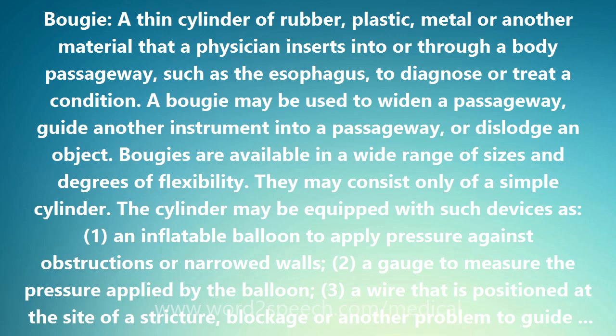Bougies equipped with balloons may be used to eliminate both strictures and blockages in the esophagus. In a typical procedure, a lubricated bougie may be inserted under local anesthesia. When the bougie reaches the site of the stricture or blockage, the balloon is inflated. The pressure from the balloon then can widen a narrowed passageway.